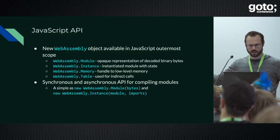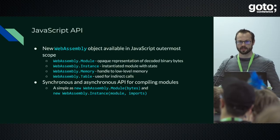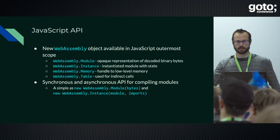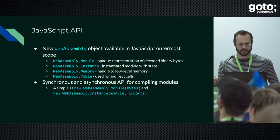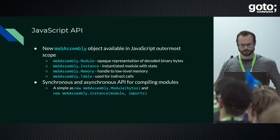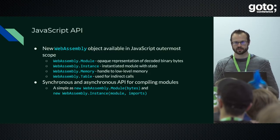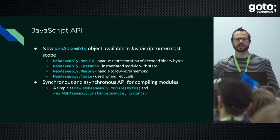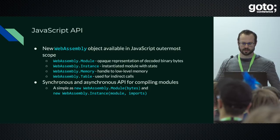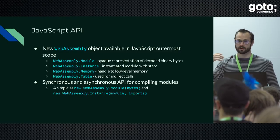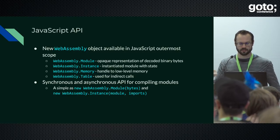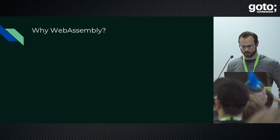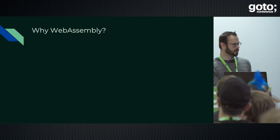The JavaScript API has a WebAssembly object in the outermost JavaScript context. We have types representing modules — you take bytes and decode them to a WebAssembly.Module instance, then from JavaScript create a WebAssembly.Instance that has the state. Memories and tables can be created and manipulated through the API. There are both synchronous and asynchronous APIs — synchronous constructors taking bytes won't complete until compilation or parsing is done, while the asynchronous APIs return a promise so you can go back to the main event loop. Now I'd like to hand it over to my colleague Andreas.